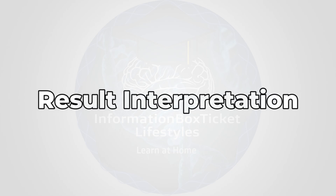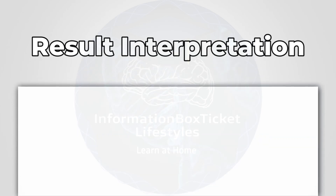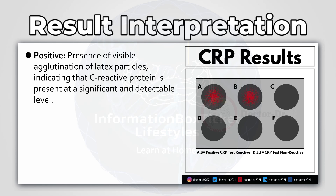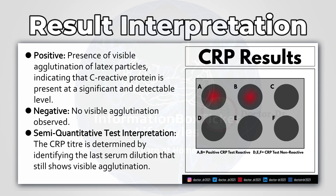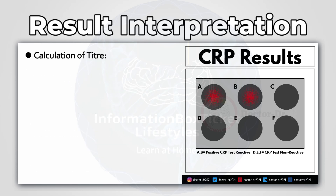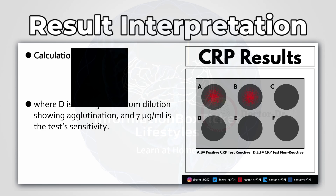Result Interpretation of C-Reactive Protein Test. Positive: presence of visible agglutination of latex particles, indicating that C-reactive protein is present at a significant and detectable level. Negative: no visible agglutination observed. For the semi-quantitative test, the C-reactive protein titer is determined by identifying the last serum dilution that still shows visible agglutination. The titer is calculated where D is the highest serum dilution showing agglutination, and 7 micrograms per milliliter is the test's sensitivity.